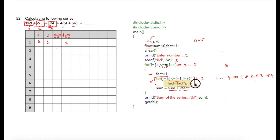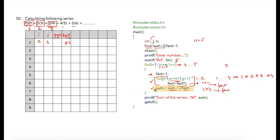The inner loop executes twice. First iteration: one multiplied by one equals one, stored into fact. Second iteration: j increments to two, so fact equals one multiplied by two which is two. Now we calculate i divided by fact: current i is one, factorial is two, so result is 0.5. We add this into sum — sum was initialized to zero so sum becomes 0.5.